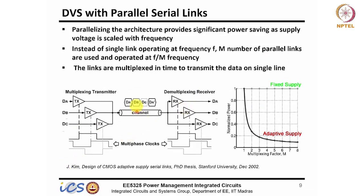In high-speed serial links they use a multiplexing technique: they change the number of parallel transmitters based on load. The multiplexing factor increases at higher load and reduces as load reduces — similar to using multiple phases in an LDO and turning off phases as load reduces.